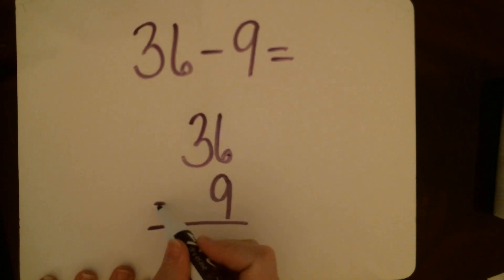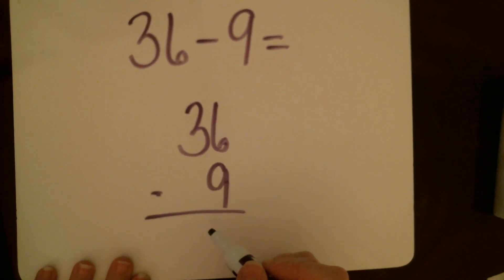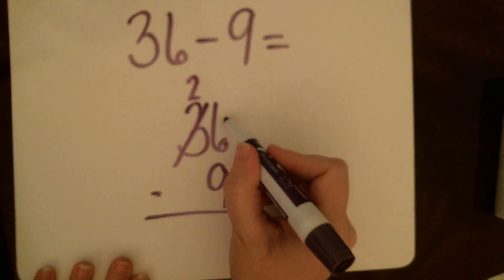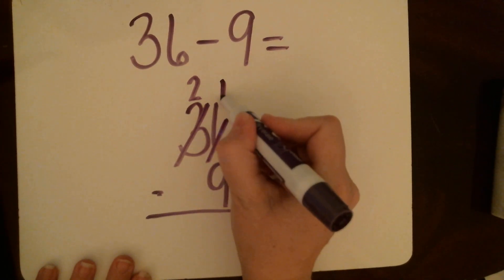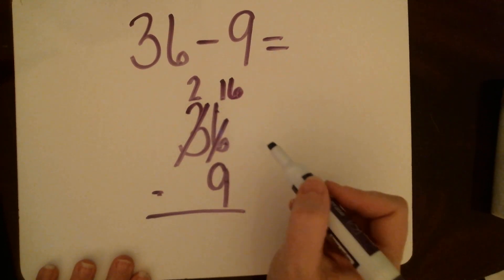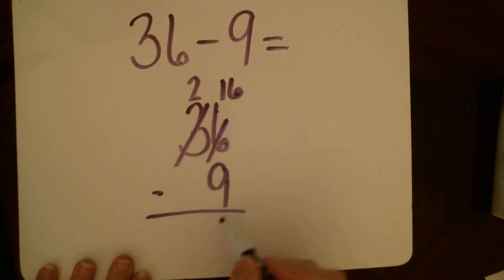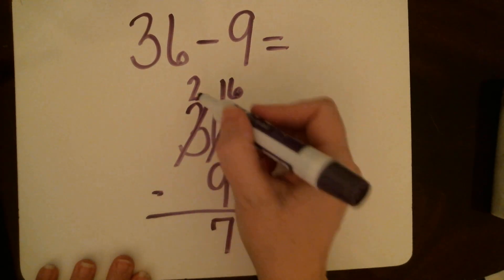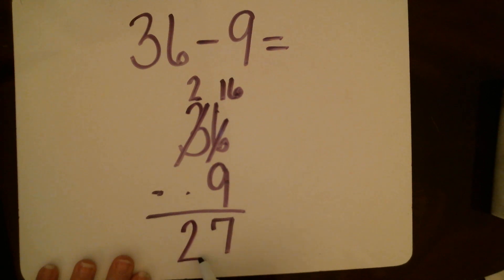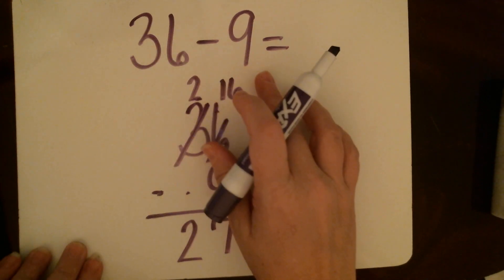So those nine ones need to go in the ones place, making sure you're lining up. Six ones minus nine ones, can't do it, so what do I need to do? Go next door and get a ten. Two tens, move that ten over here, there's that ten I went next door and got plus the six ones that I already had. I now have sixteen ones. Sixteen minus nine is seven. Two tens minus no tens, twenty take nothing away is twenty, so it's twenty-seven.